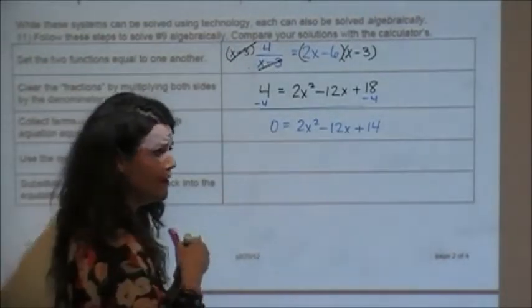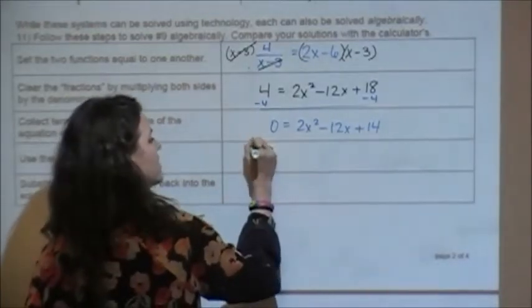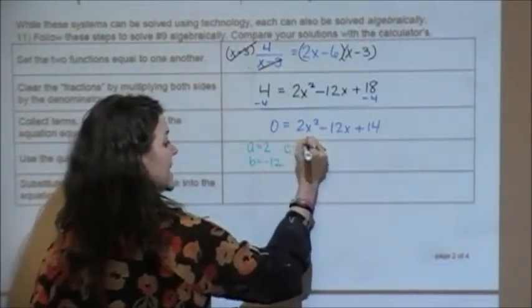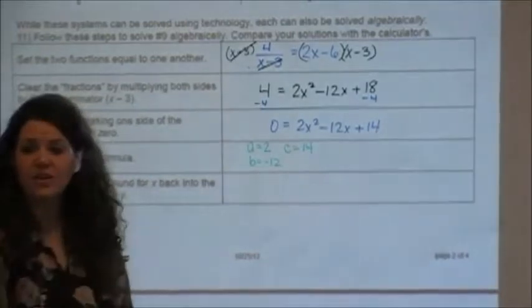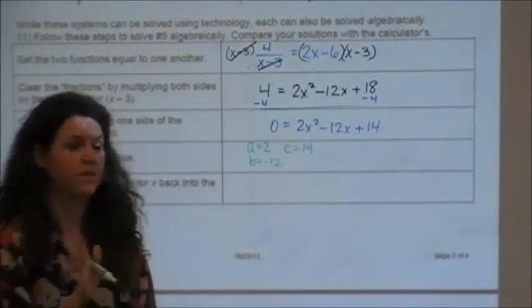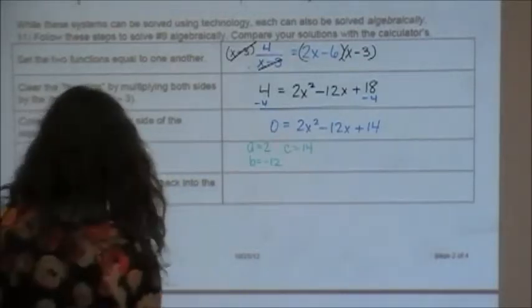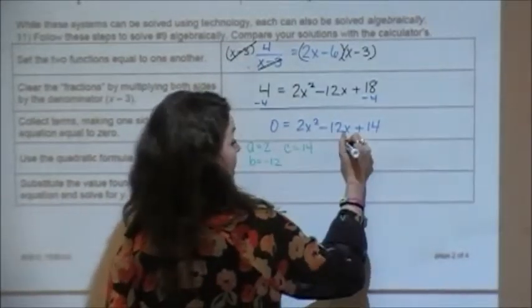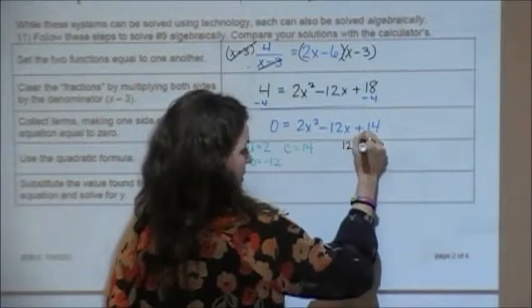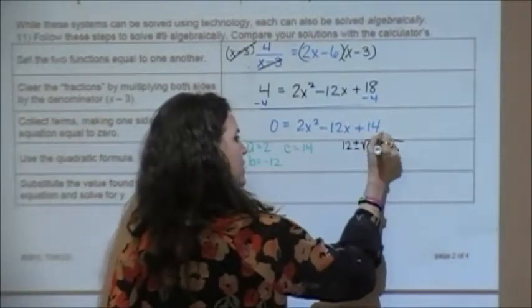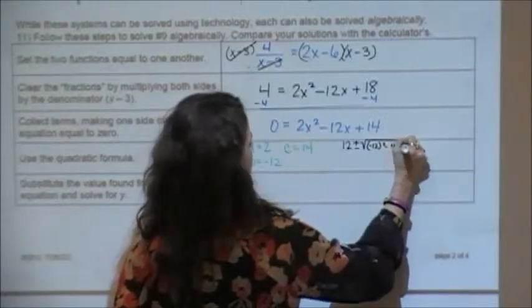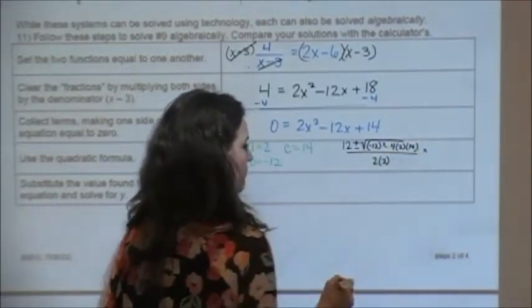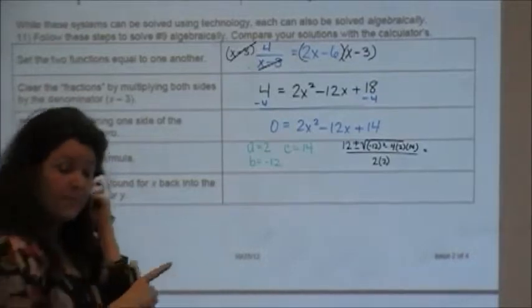We're going to go ahead and move to the quadratic formula. I put it up here just in case you have forgotten it, but if you have forgotten it please go back and re-memorize it because you need to know it. My a value is 2, my b value is negative 12, and my c value is 14. Now I'm just going to plug into the quadratic formula. So negative negative 12 is going to be positive 12 plus or minus the square root of negative 12 squared minus 4 times 2 times 14, all over 2 times 2.